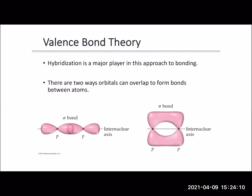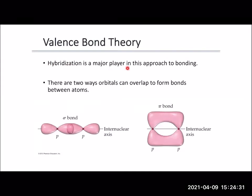When we look at valence bond theory, it helps us explain how atoms bond together to create molecules. Hybridization plays a major role and a major part of how the bonding is done.